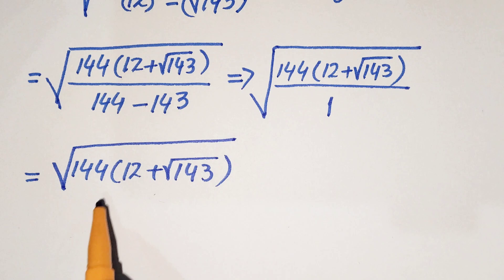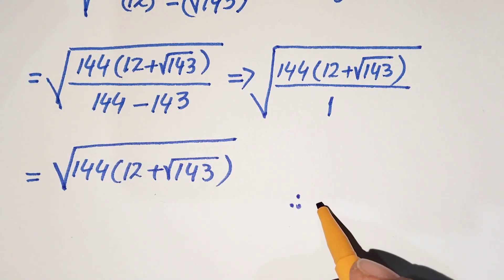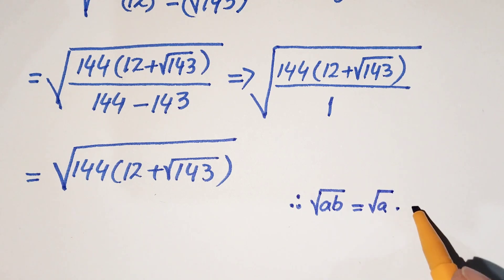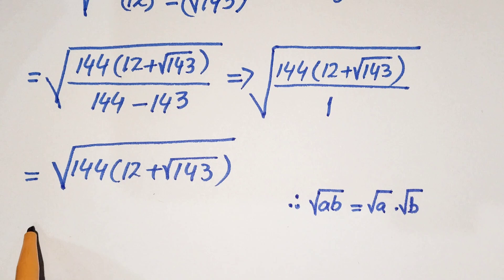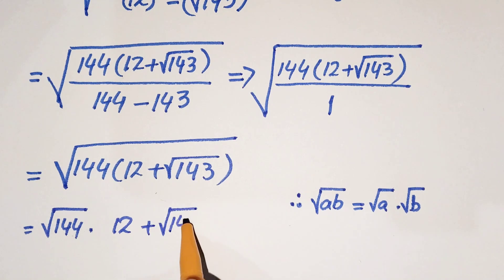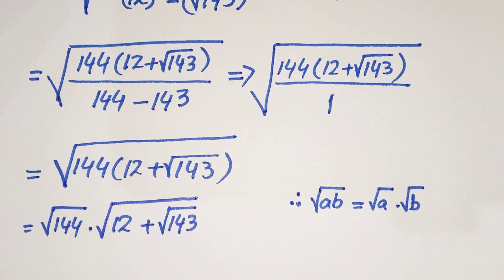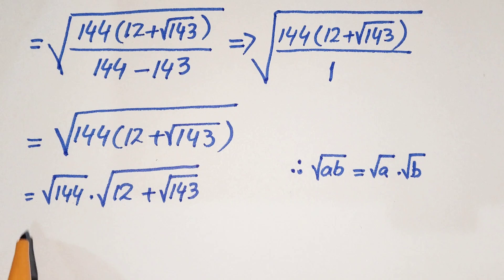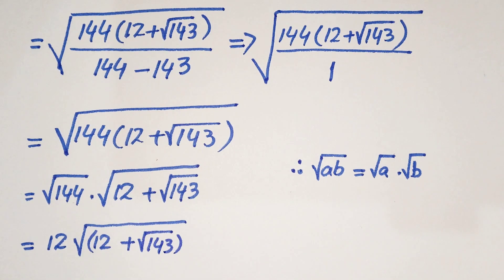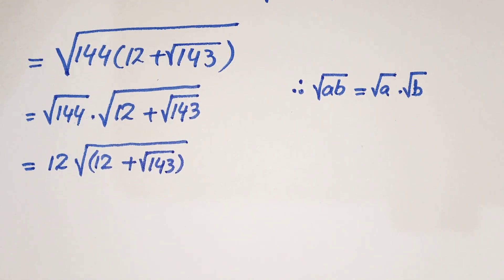We can separate these two terms under the square root. By the exponential identity, square root of a times b equals square root of a times square root of b. So we write square root of 144 times square root of 12 plus square root of 143. Since square root of 144 equals 12, we have 12 times square root of 12 plus square root of 143. Now we will multiply and divide by 2 inside the square root.